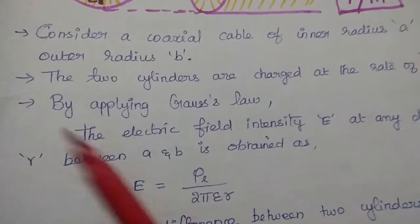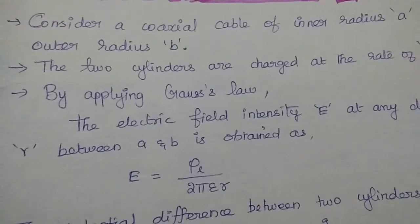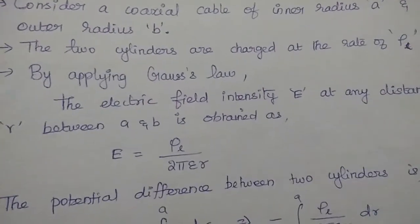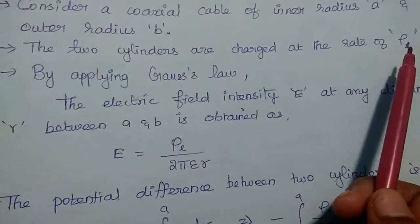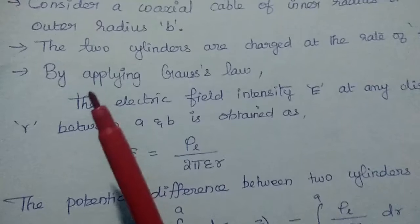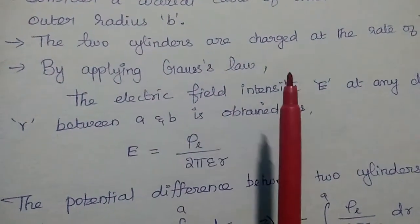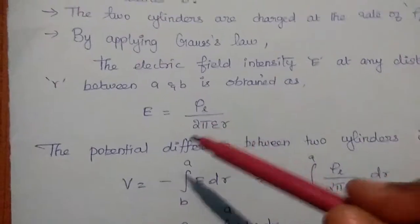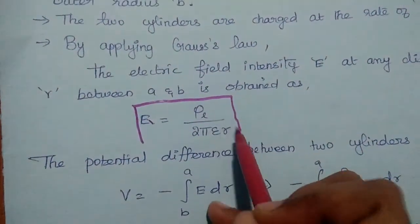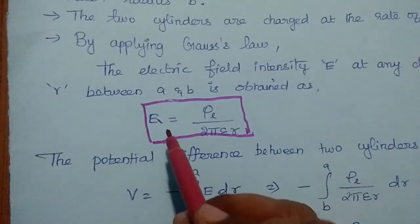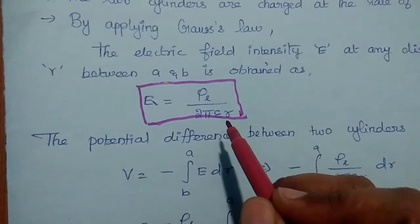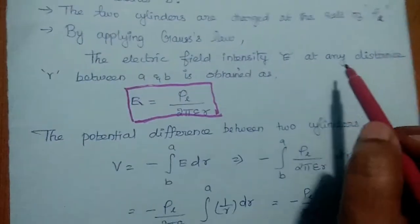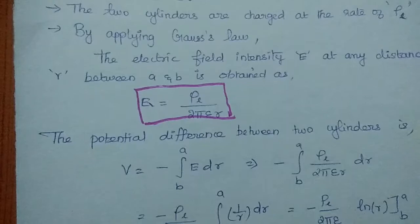Next, consider a coaxial cable of inner radius A and outer radius B. The two cylinders are charged at the rate of Rho L — that is line charge density — for a particular unit length. By applying Gauss's law, the electric field intensity at any distance R between A and B is obtained. So we have already derived this in our applications of Gauss's law, and we can directly use it. Electric field intensity E equals Rho L divided by 2 pi epsilon R, at any distance R between A and B in the coaxial cable.